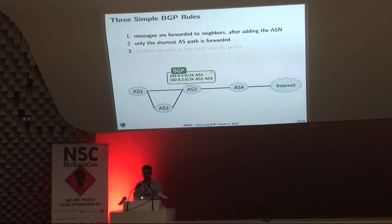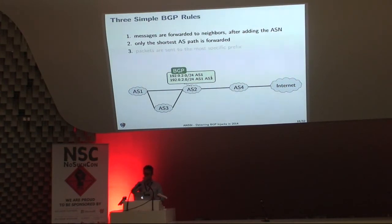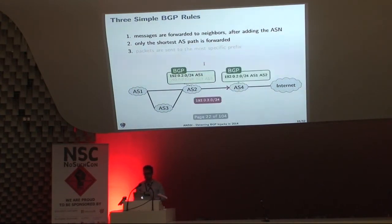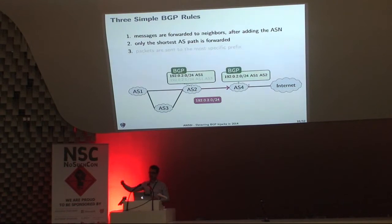The second rule says that only the shortest AS path is forwarded. An AS path is the list of autonomous systems you must send your packet through. Here we have two paths to AS1 — one is short, one is longer. Because of rule number 2, routers in AS2 will select the short path and forward to AS4. From AS4's point of view, packets will be sent to AS2, then to AS1.